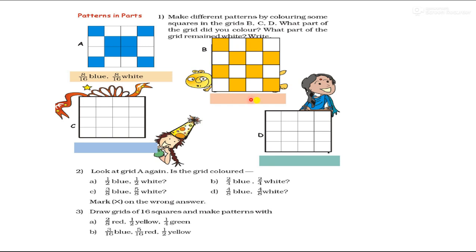So in this B grid, I color like this: 8 boxes orange and 8 boxes are white. So I will write: 8 upon 16 orange and 8 upon 16 white. Likewise, you have to color these 2 grids and write which part you colored and which part remained white.